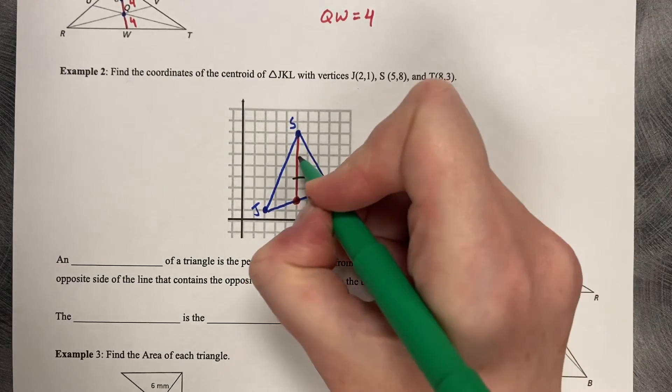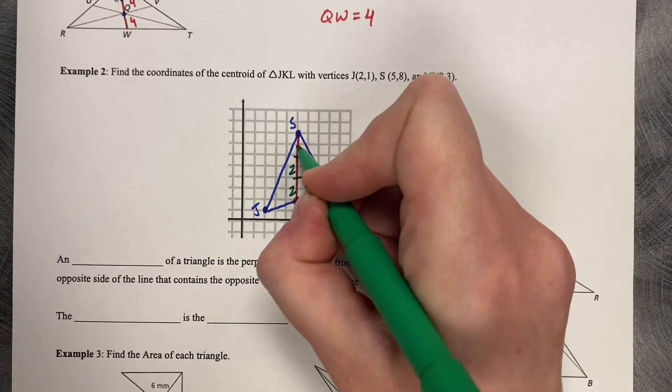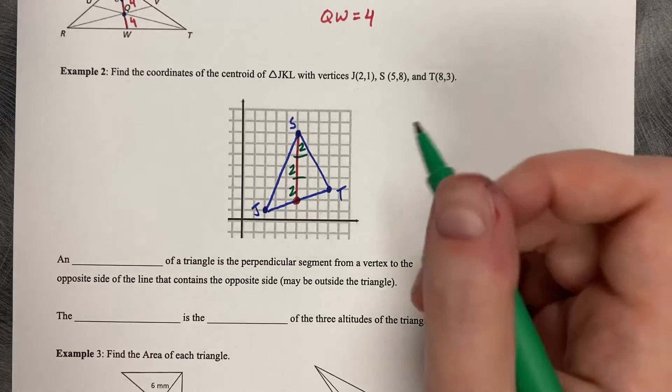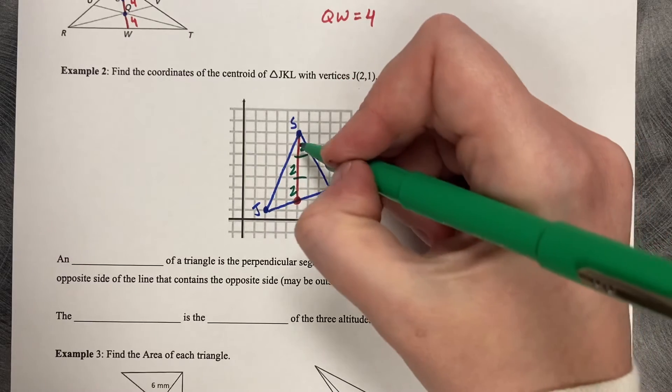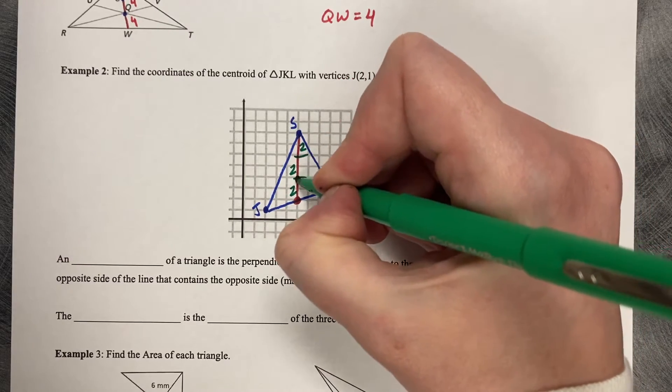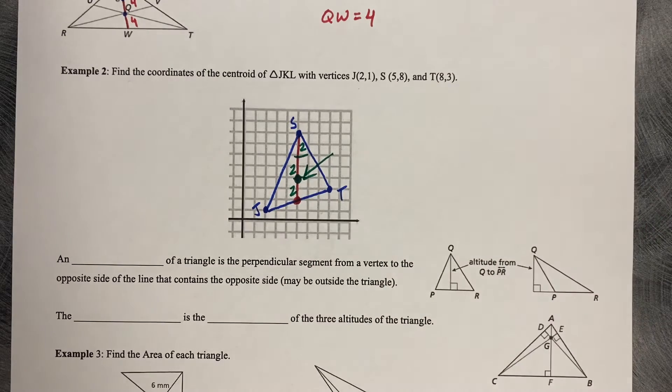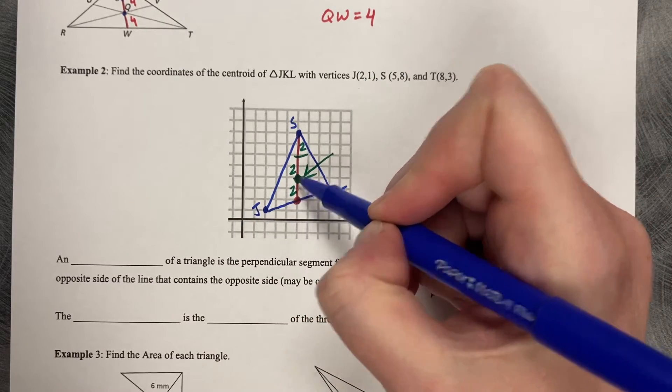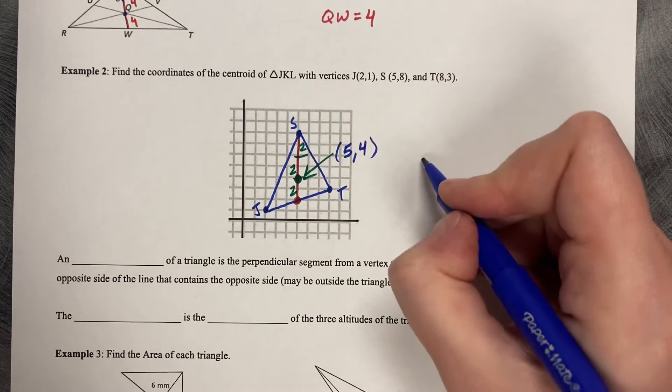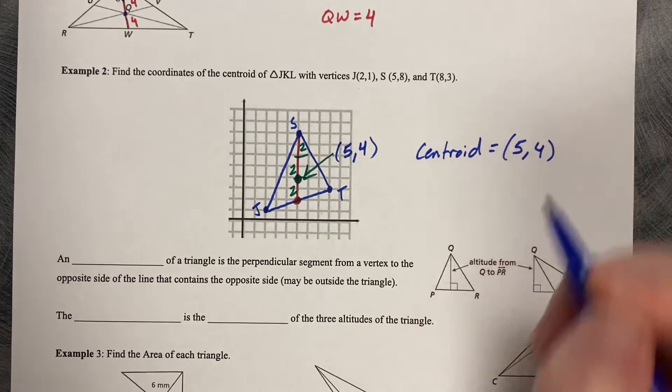Now that you've drawn in that midpoint, all you need to do is cut that length into thirds. So 1, 2, 1, 2, 1, 2. So 2, 2, and 2. So our median is 2, 4, 6 units long, and we want two-thirds of that. So we come down two-thirds, and our centroid lands right there at two-thirds the length. So all we need to do is figure out where is that located. So that's located at 5, 1, 2, 3, 4. So the centroid is at 5, 4.